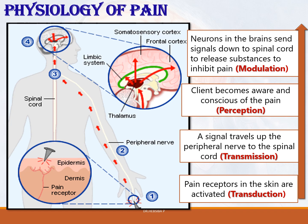The basic physiology of pain involves a stimulus, a carrier, and a perceiving center. When there is a pain stimulus, the pain receptors in the skin are activated — this is called transduction. Then a signal travels up the peripheral nerve to the spinal cord — this is the transmission phase. The client then becomes aware and conscious of the pain — that is perception. Finally, neurons in the brain send signals down to the spinal cord to release substances to inhibit the pain — that is modulation.